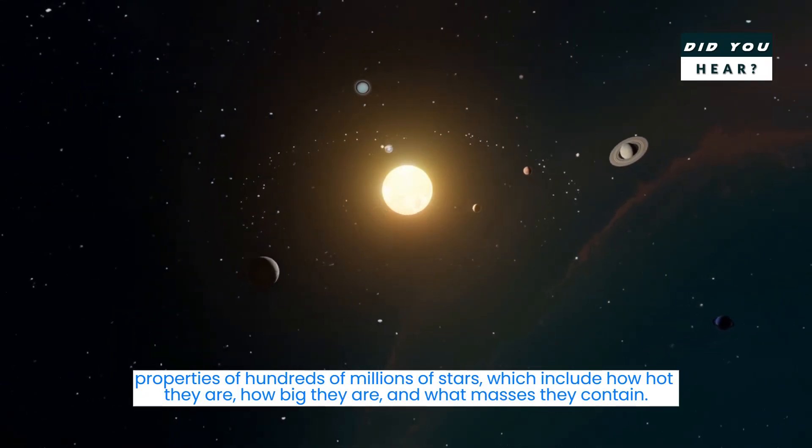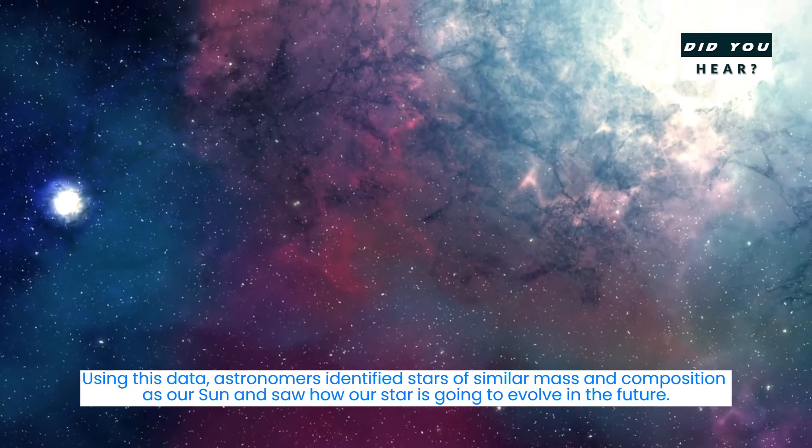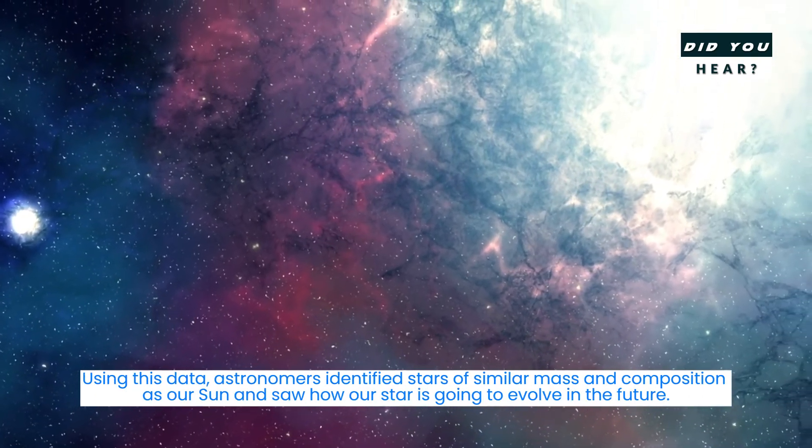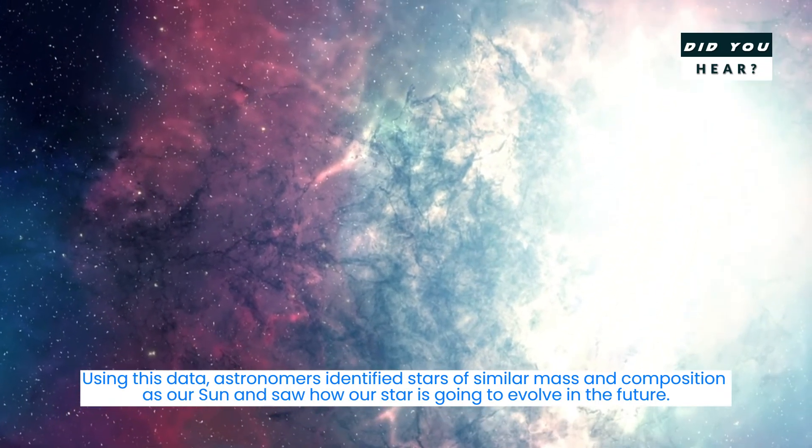The latest dataset contained information about the intrinsic properties of hundreds of millions of stars, which include how hot they are, how big they are, and what masses they contain. Using this data, astronomers identified stars of similar mass and composition as our sun and saw how our star is going to evolve in the future.